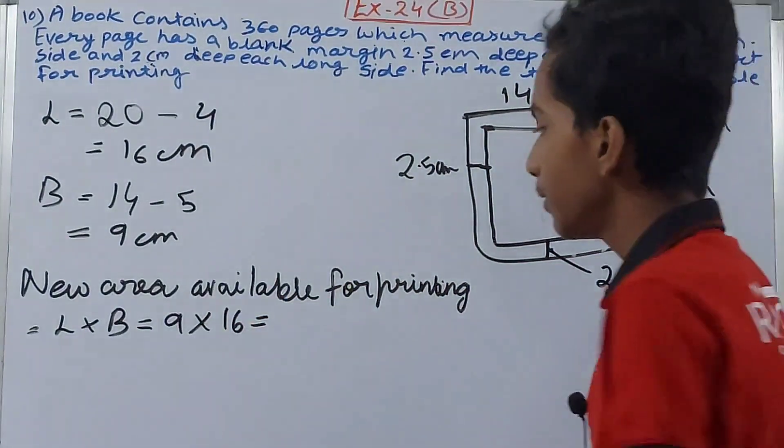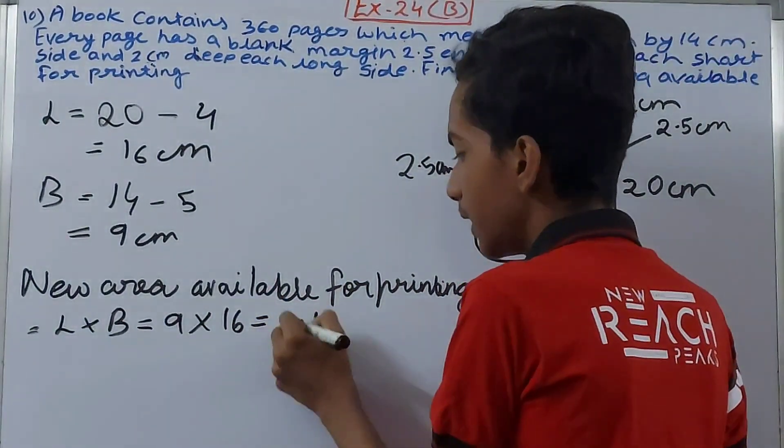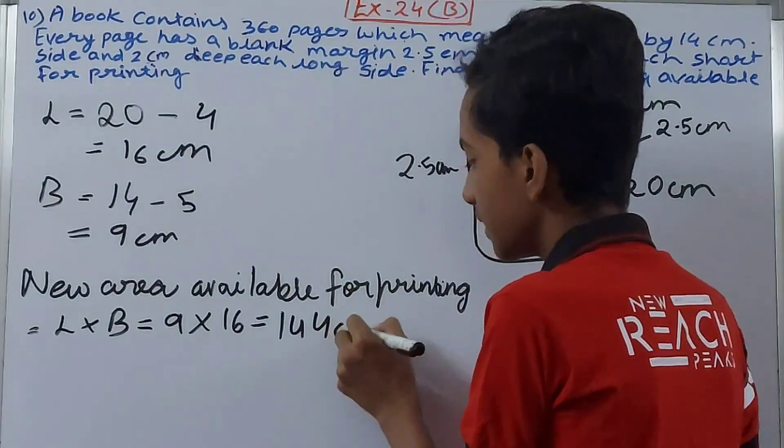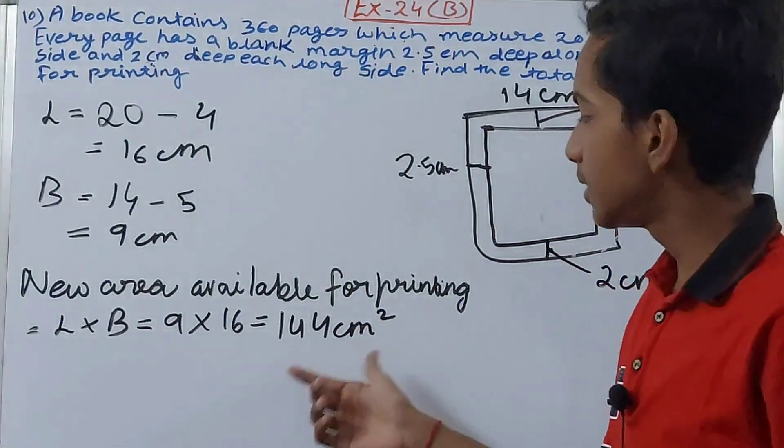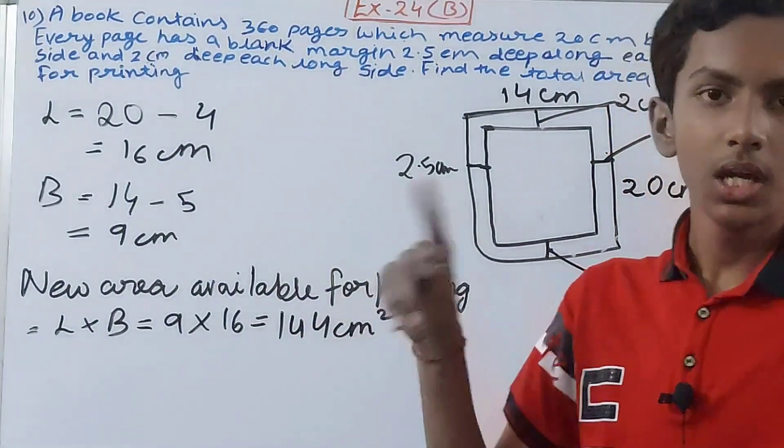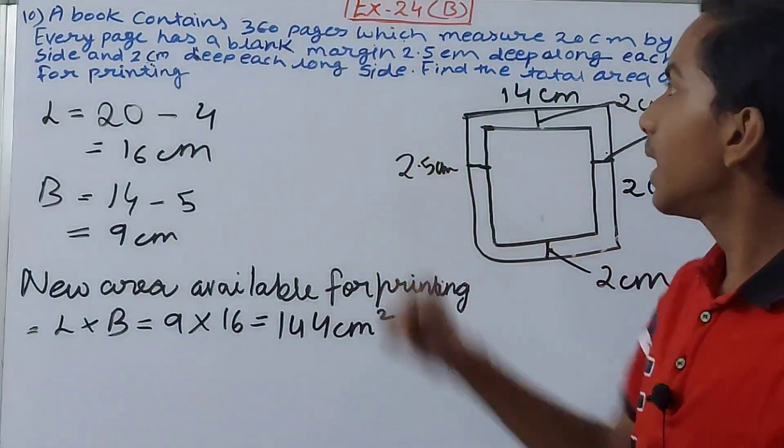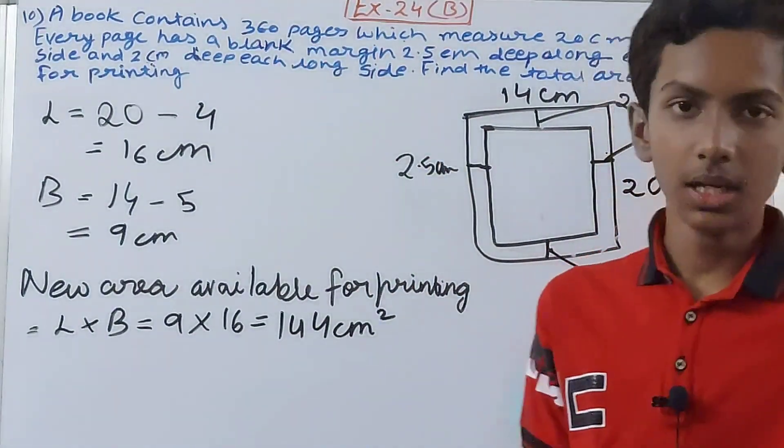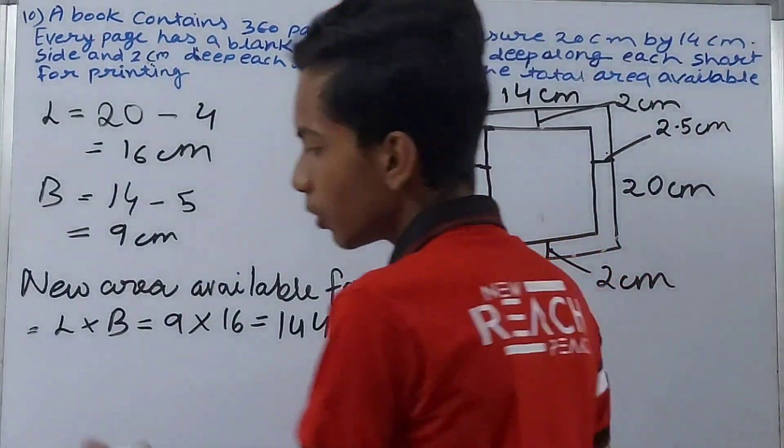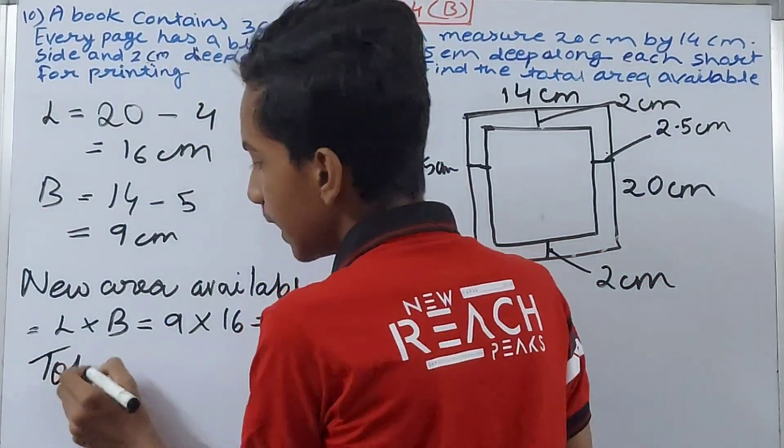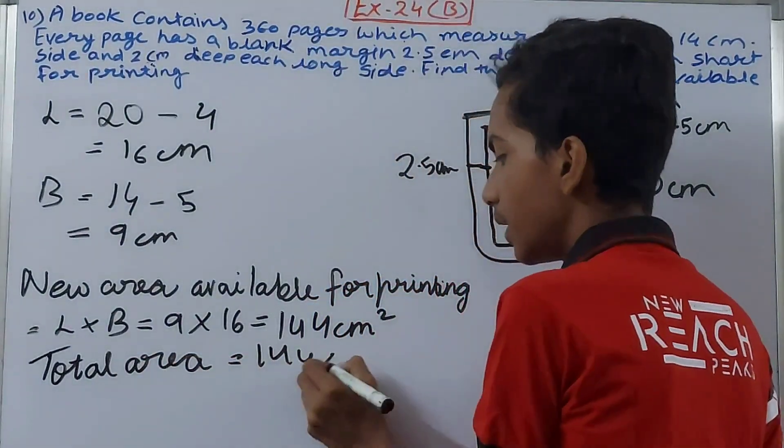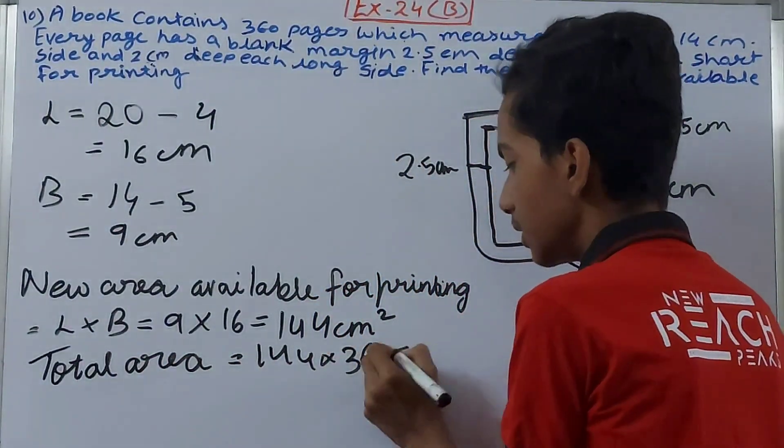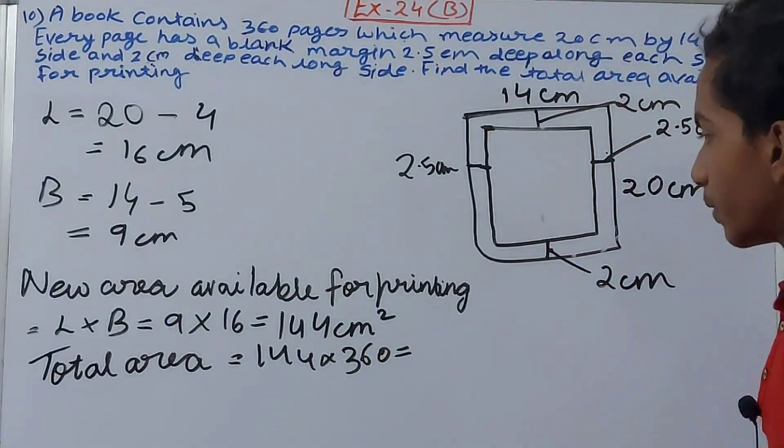Will be what? See here, length into breadth, that will be 9 into 16, right? And what does 9 into 16 give you? 144, right? 144 square centimeters. But this is not over here because this is the area only for one page, but in the entire book there are how many pages? 360 pages.